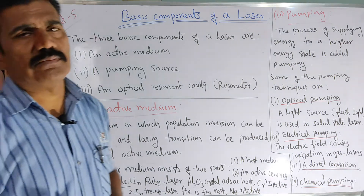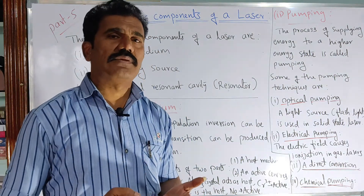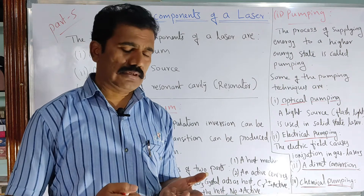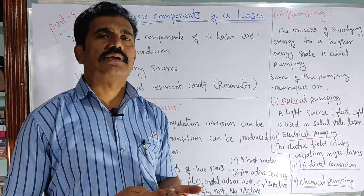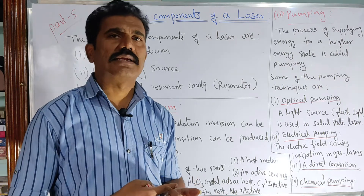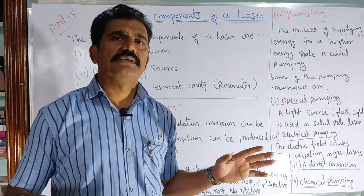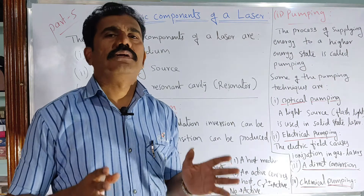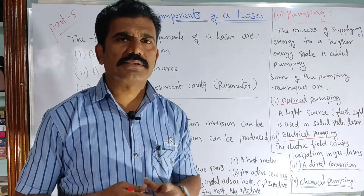We will come across different types of lasers. For example, in general we can say there are solid state lasers, there are gaseous lasers, and then there are liquid lasers like dye lasers and semiconductor lasers. For all these kinds of devices, we have certain common components.